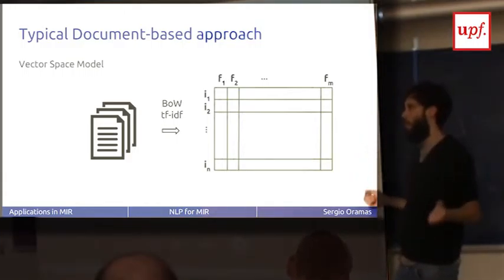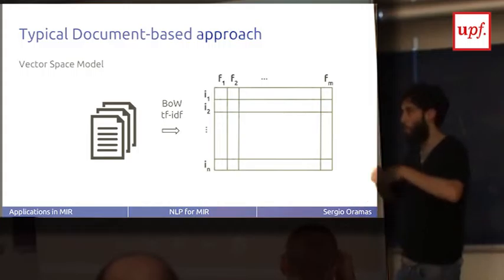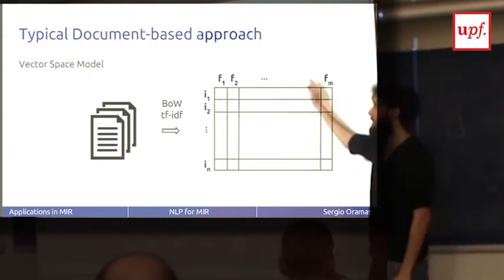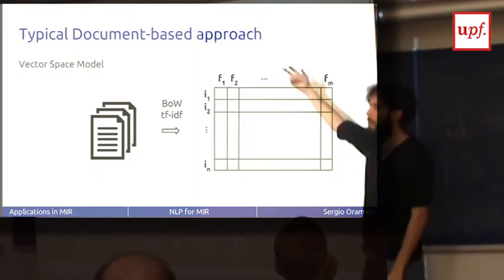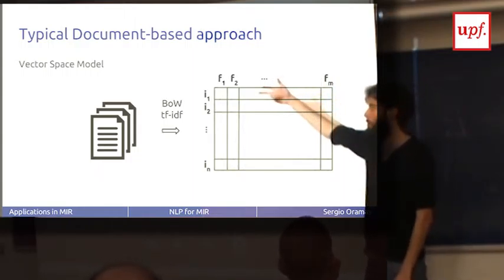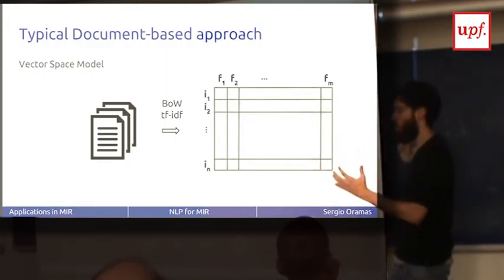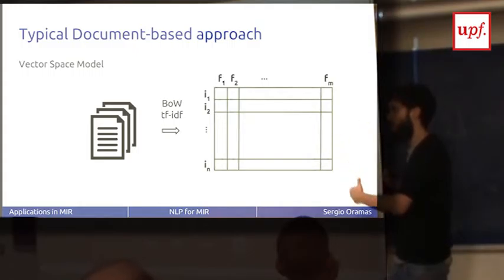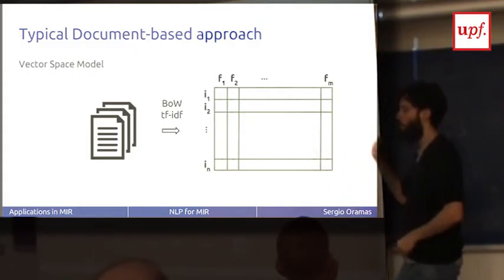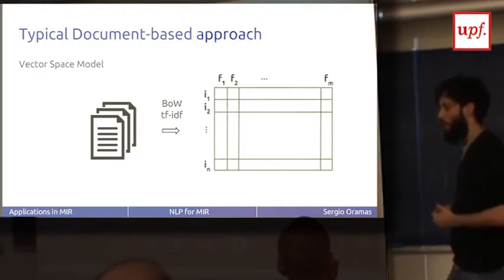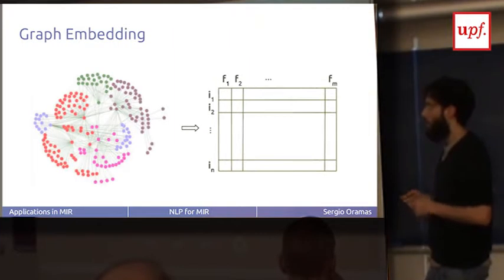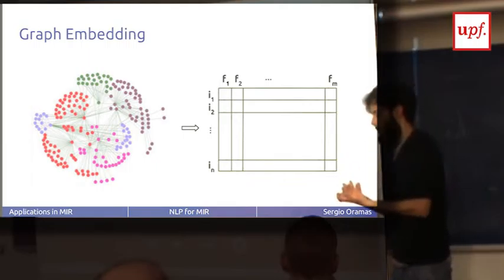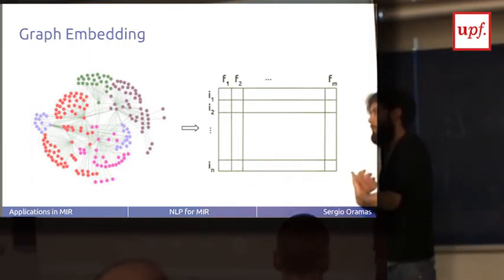The typical approach for document classification, document similarity, or document recommendation — because all of these exist outside MIR, in NLP — is to use what is called a vector space model approach. You create a feature vector where every feature is a word. You have a vocabulary of 500,000 or 50,000 words, and every feature is one of these words. An item is defined with a one if it has this word, or zero if it doesn't. This is the vector space model, and this is about word representation.